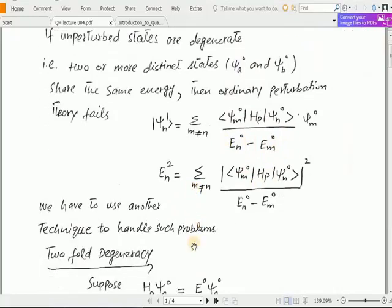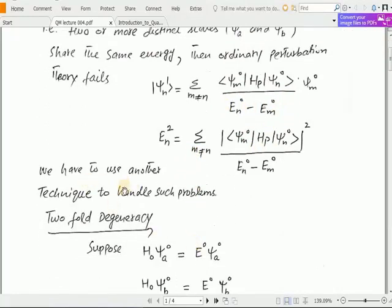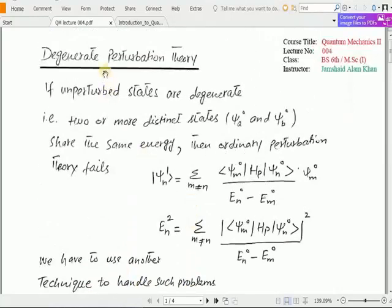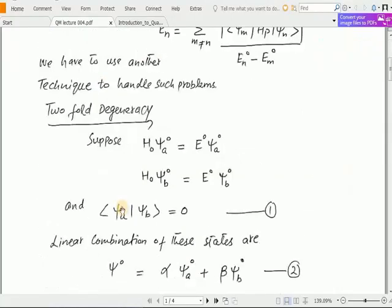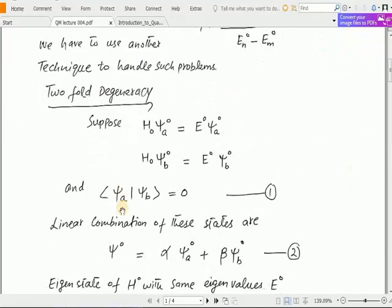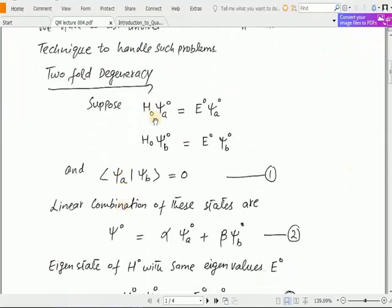So what we have to do is use another technique to handle such problems. Here we are going to use the degenerate perturbation theory. We are considering here the two-fold degeneracy. Suppose H_0 ψ_a^0 equals E^0 ψ_a^0 and H_0 ψ_b^0 equals E^0 ψ_b^0.